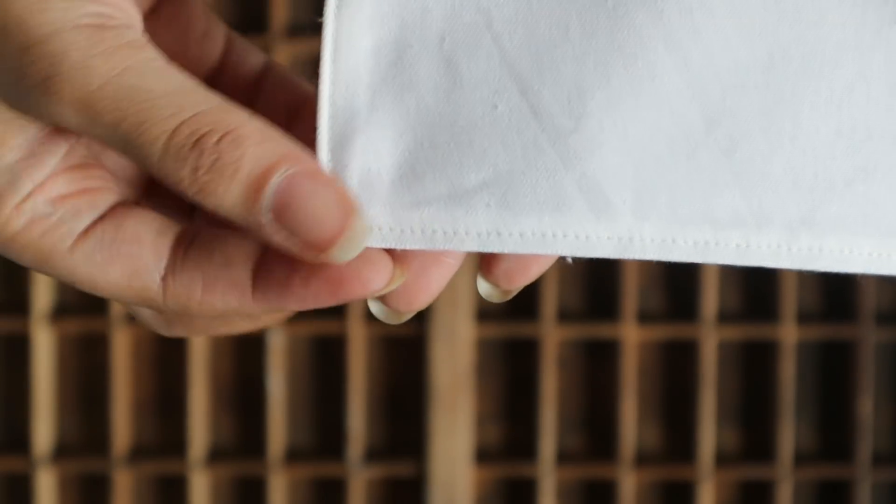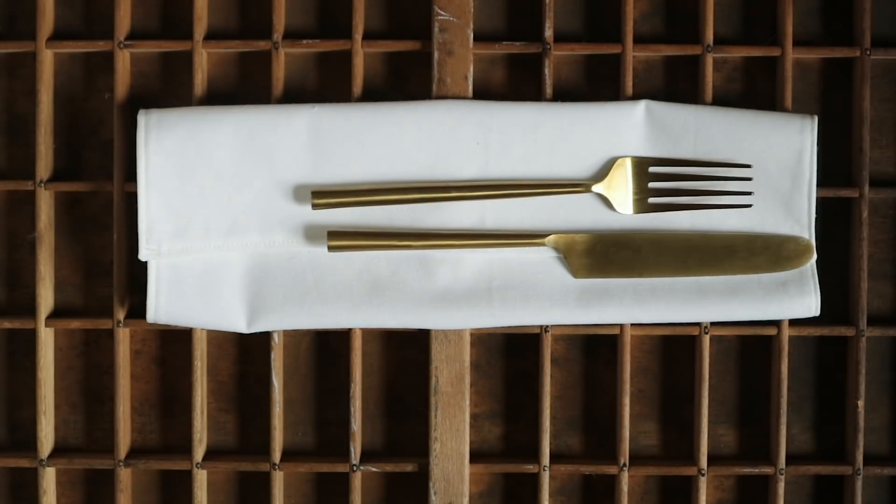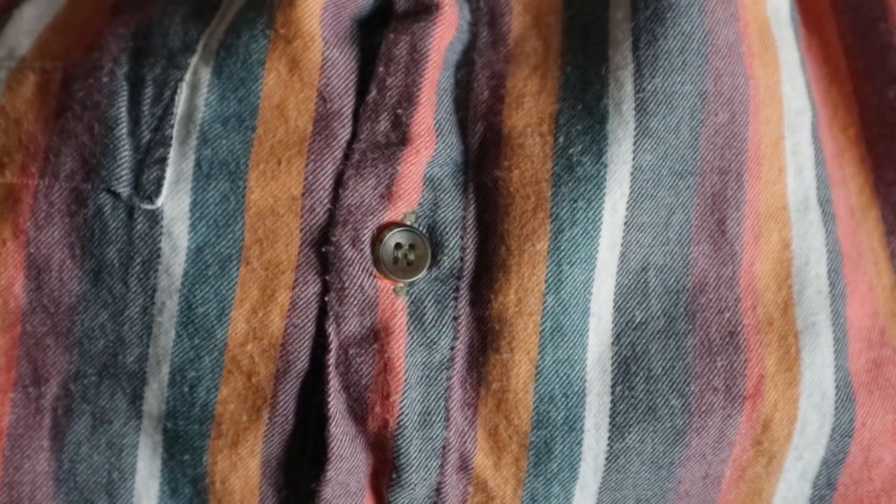And this is our napkin done. So with what you've learned today, not only can you make a napkin, but you can now technically make a pair of curtains, hem some curtains that you already have, and even a pair of jeans. You can also sew on a button and countless other projects.